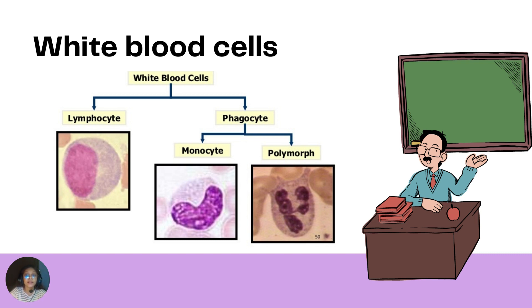Lymphocytes are produced by the lymph glands or lymph nodes. Each lymphocyte has a large rounded nucleus and a relatively small amount of non-granular cytoplasm, tends to be nearly round in shape, and shows only limited movement. Phagocytes are produced by the bone marrow and can ingest foreign particles like bacteria. There are two kinds of phagocytes: monocytes and polymorphs.